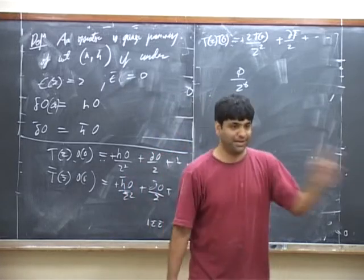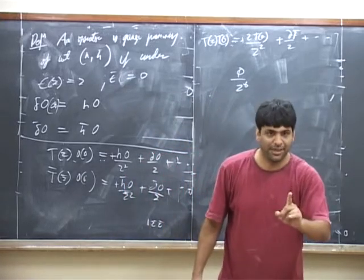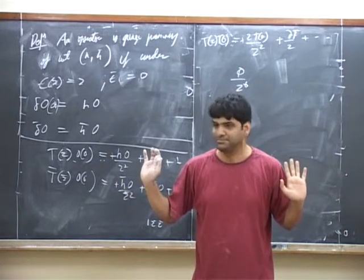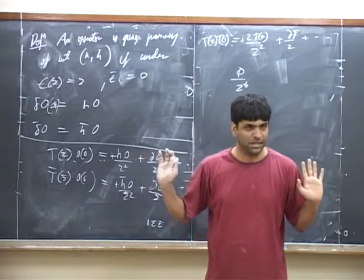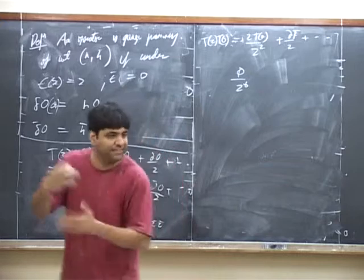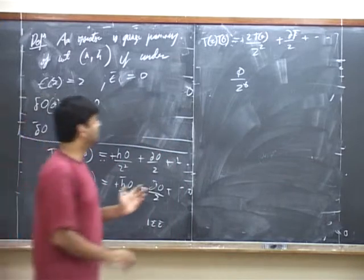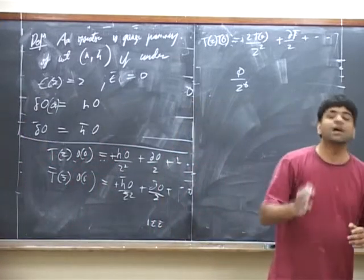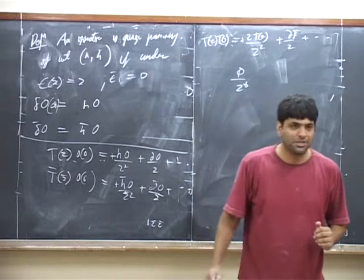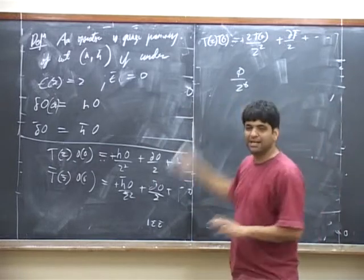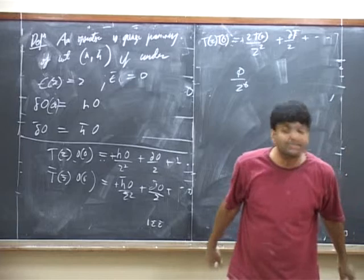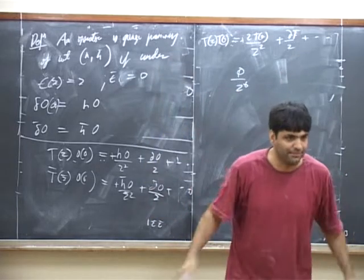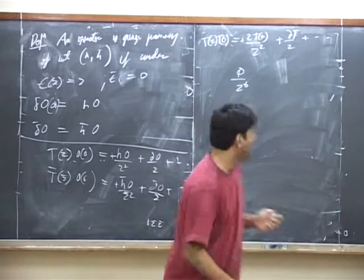Moreover, there is a unique operator whose dimension is 0, and that is the identity operator. We will prove this at the next class or the class after that. But that is assuming that we are dealing with a unitary quantum field theory. It may be possible to prove what I am saying more generally, but let's put in the assumption of unitarity at least.